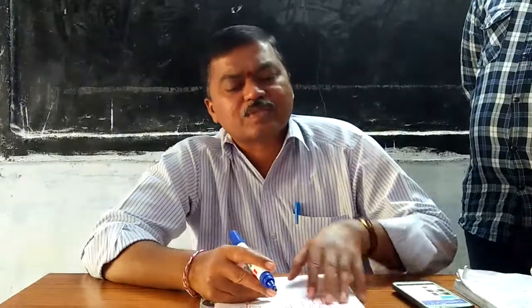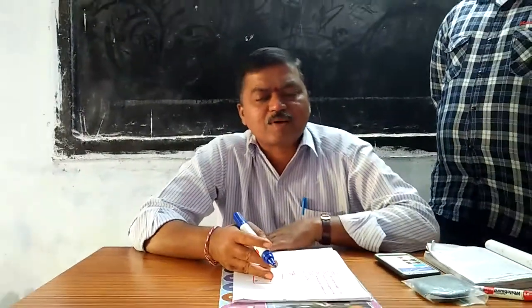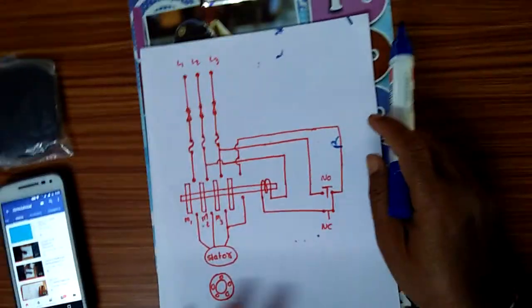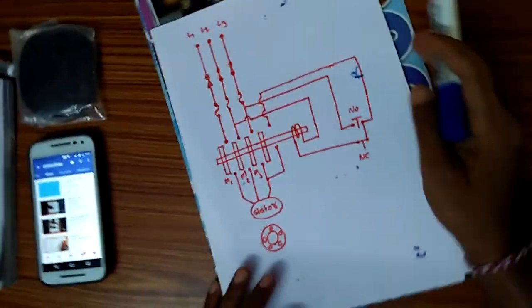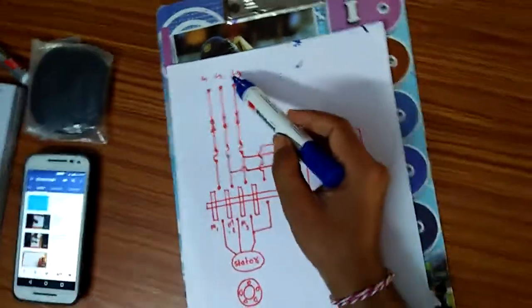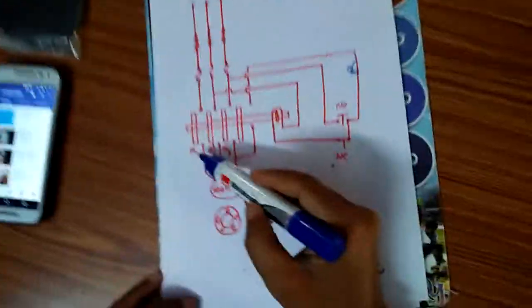Now there is a circuit diagram. Here are the lines — Line One, Line Two, and Line Three-Phase.